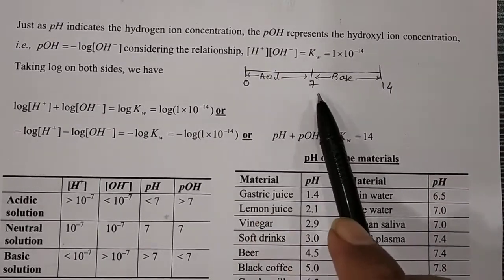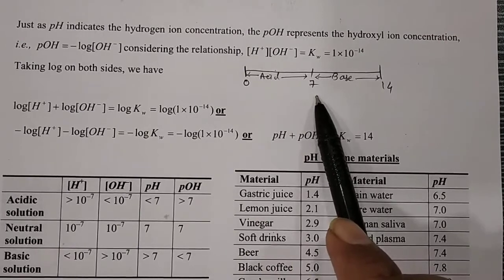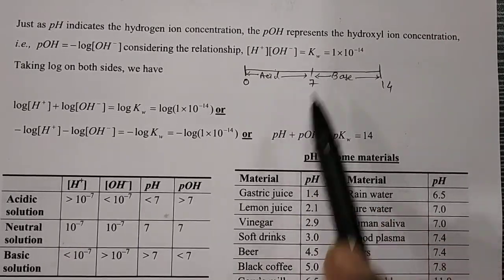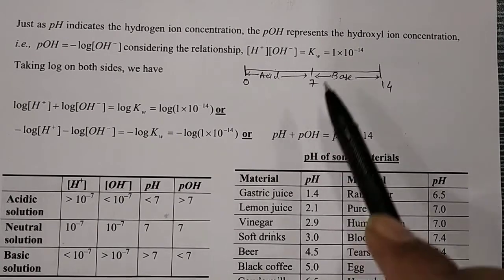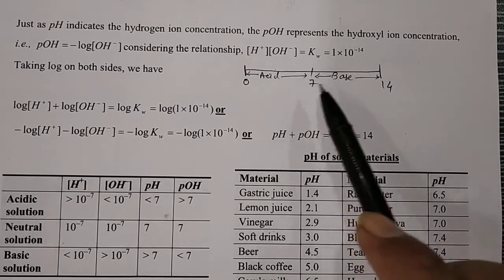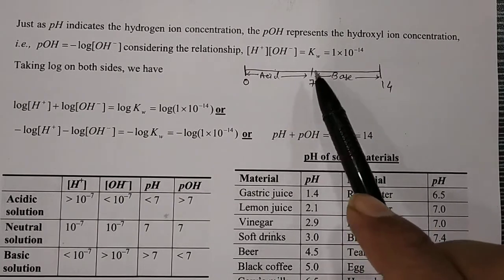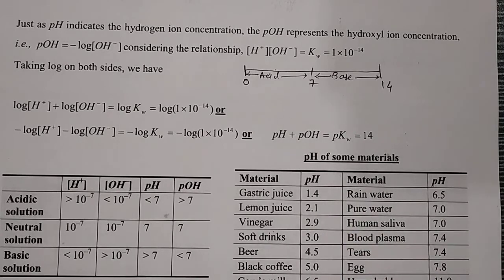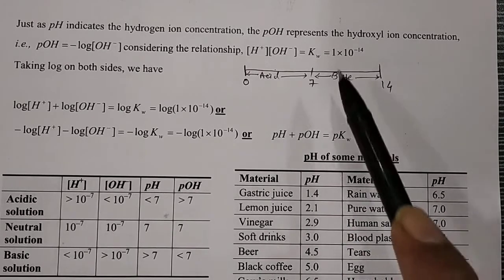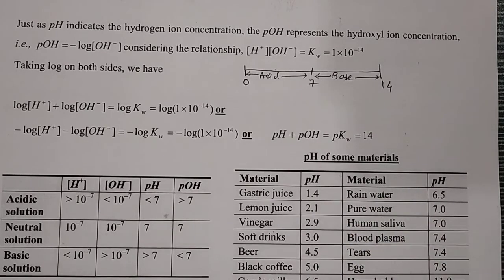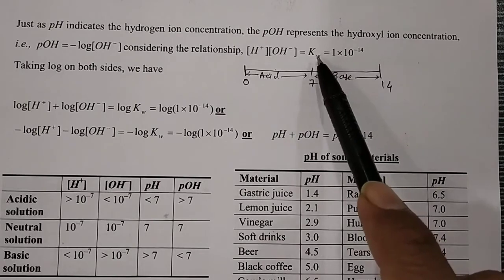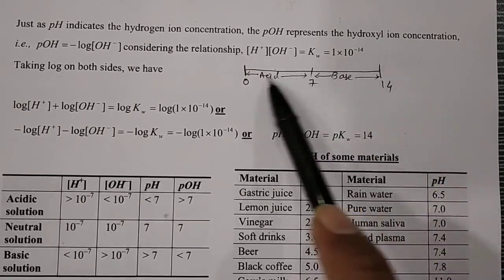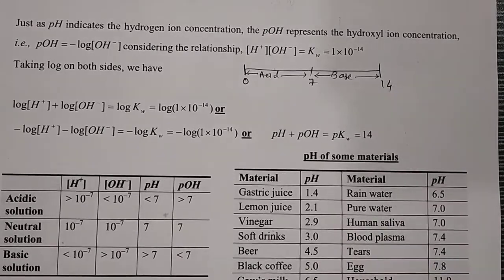On the pH scale, 0 to 7 is acidic, 7 to 14 is basic, and exactly 7 is neutral. Generally, water has a neutral pH of 7. H₂O dissociates into H+ and OH−, that's why it is neutral. The scale of pH from 0 to 14 is defined on the basis of the ionic product of water, which is 1×10⁻¹⁴.